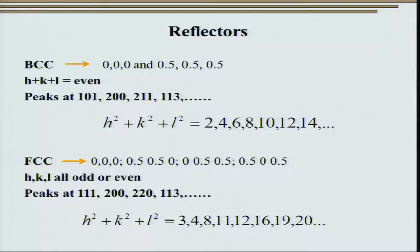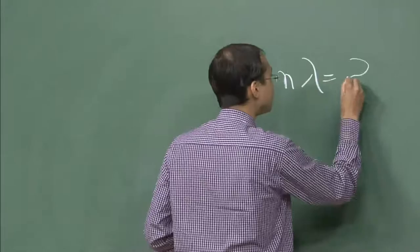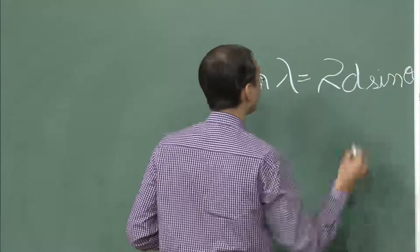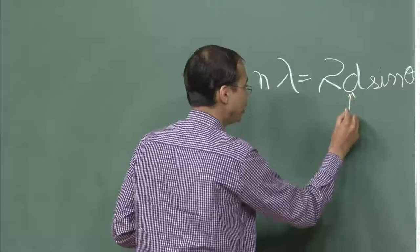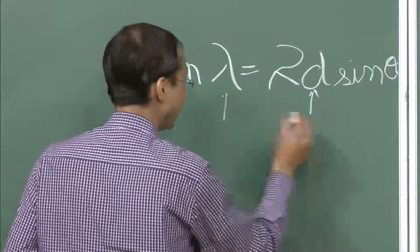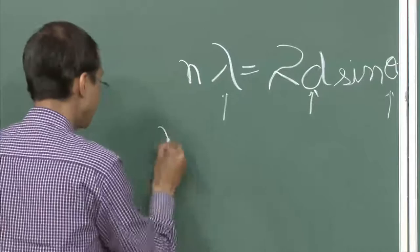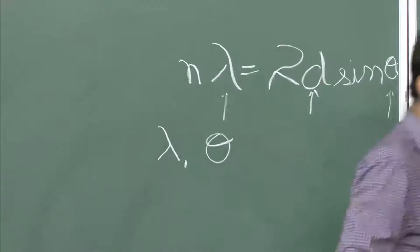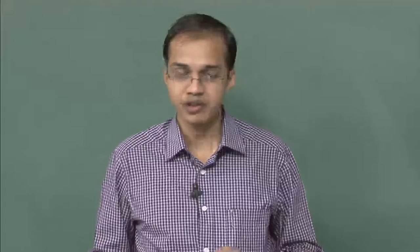All the techniques comprising X-ray diffraction have one thing in common: Bragg's law. For a given crystalline material, the d-spacing is related to the lattice parameter. The wavelength λ and the angle θ are the two variables. So all diffraction techniques essentially deal with either varying λ or θ. To have a look at those diffraction techniques, let us look at this table.